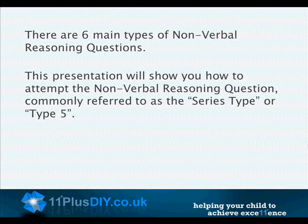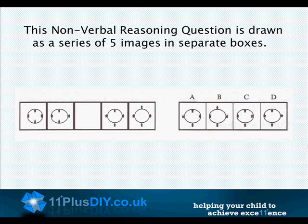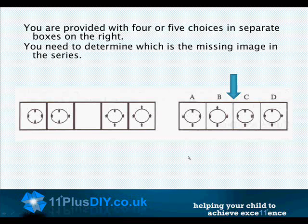There are six main types of non-verbal reasoning questions. This presentation will show you how to attempt the non-verbal reasoning question commonly referred to as the series type or type 5. This question is drawn as a series of five images in separate boxes. The point of the exercise is to find the missing picture in the series. You are provided with four or five choices in separate boxes on the right, and you need to determine which is the missing image.